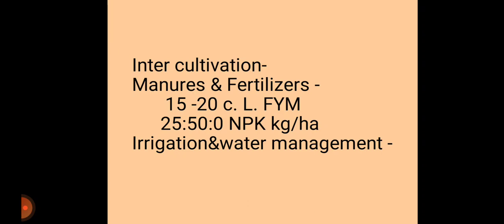For fertilizer management, 15 to 20 cart loads of FYM should be applied at the last harrowing during preparatory tillage. Additionally, 25 kg nitrogen, 50 kg phosphorus, and 0 kg potassium per hectare should be applied at the time of sowing. This 25:50:0 NPK dose is the recommended fertilizer for pigeon pea crop.